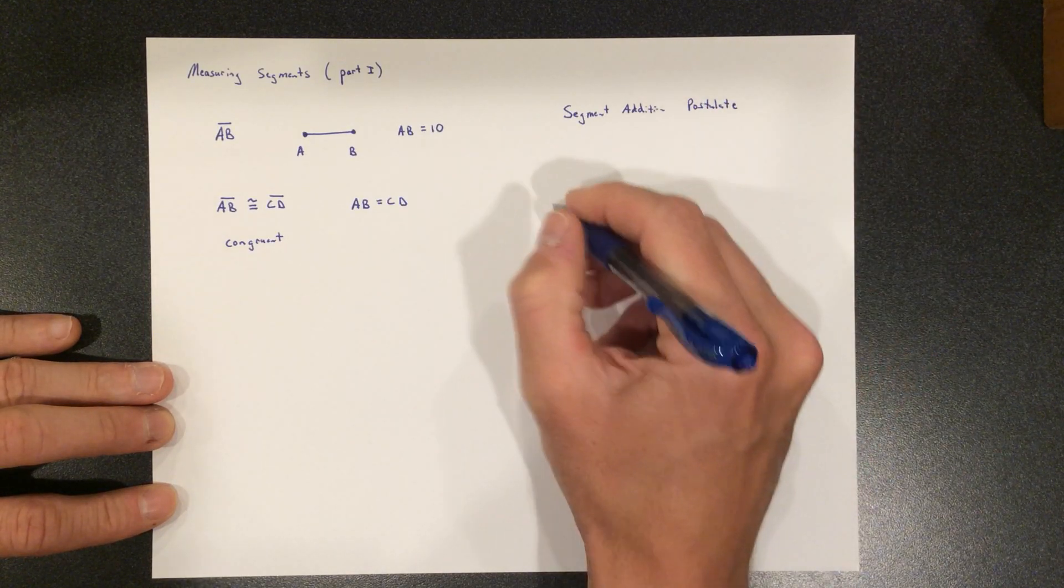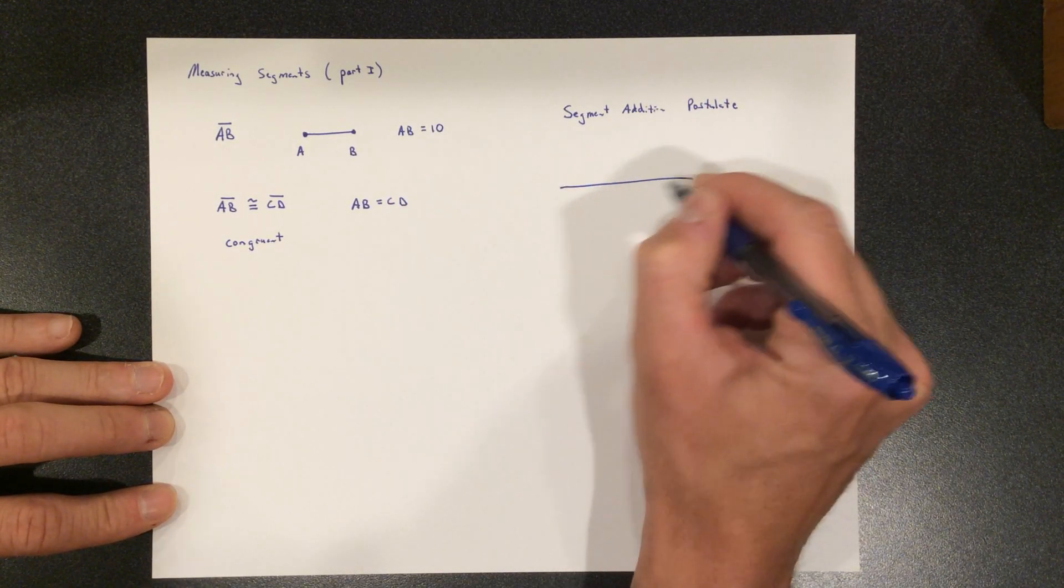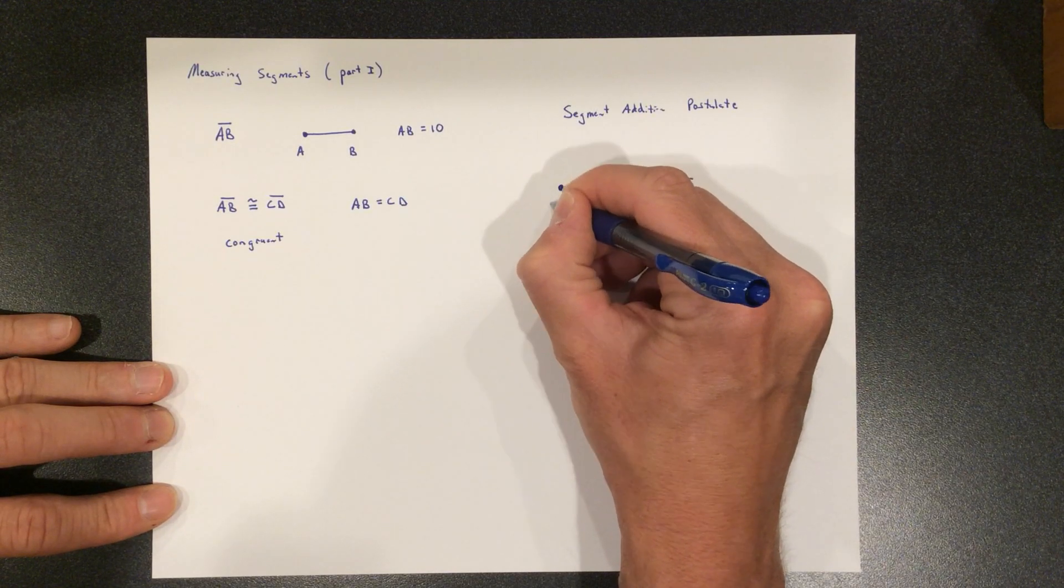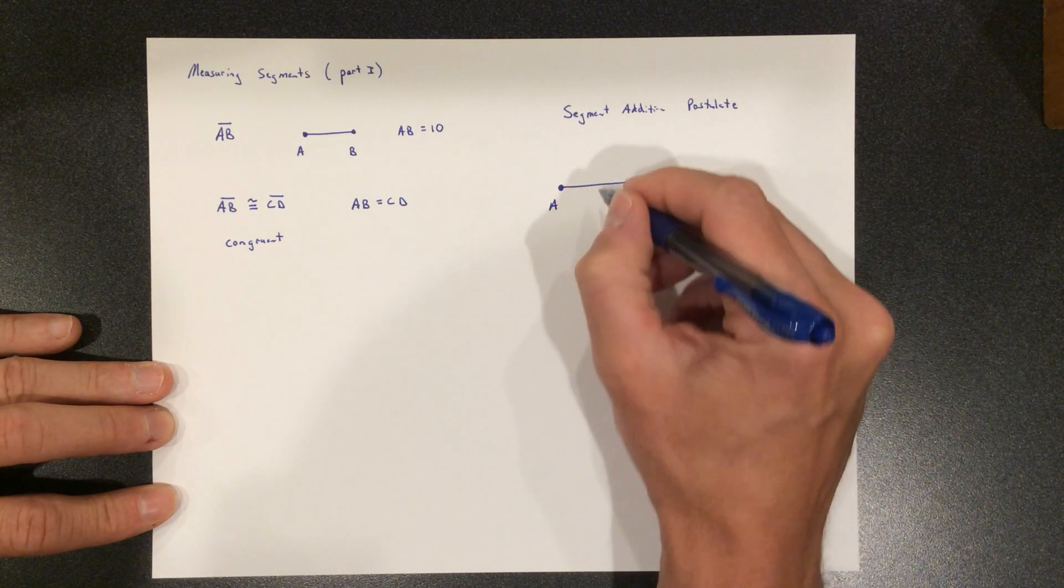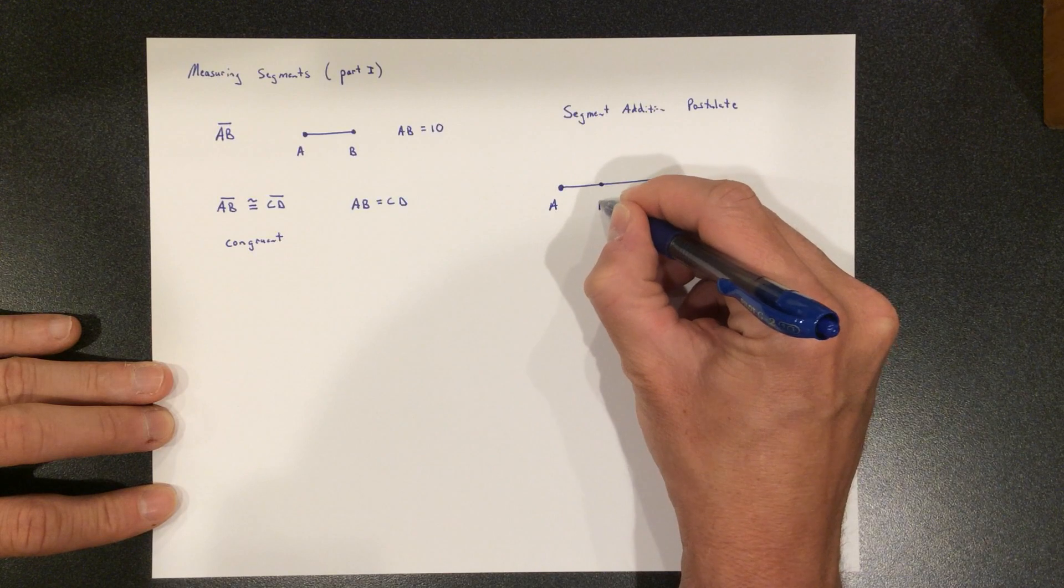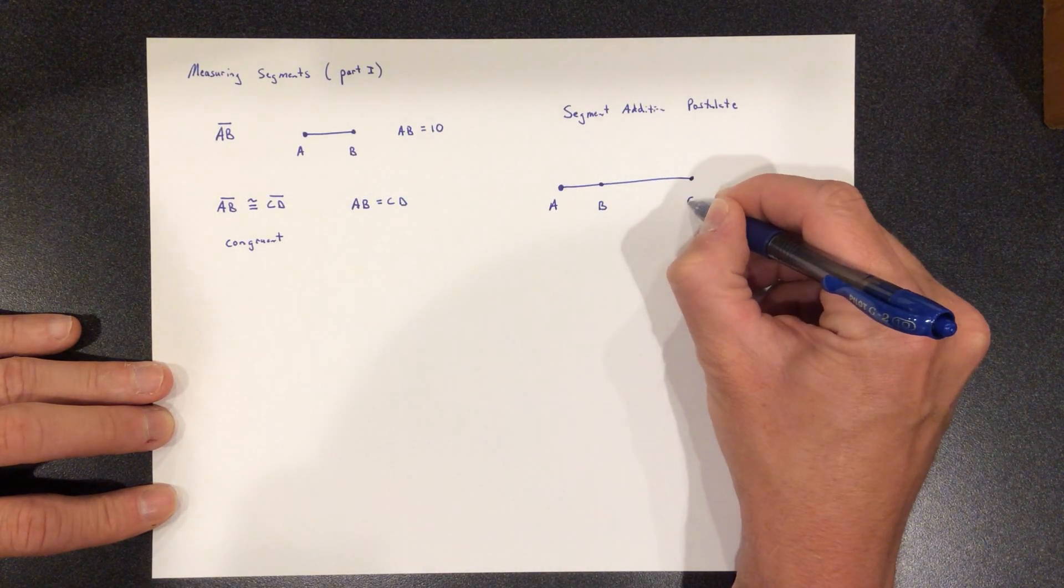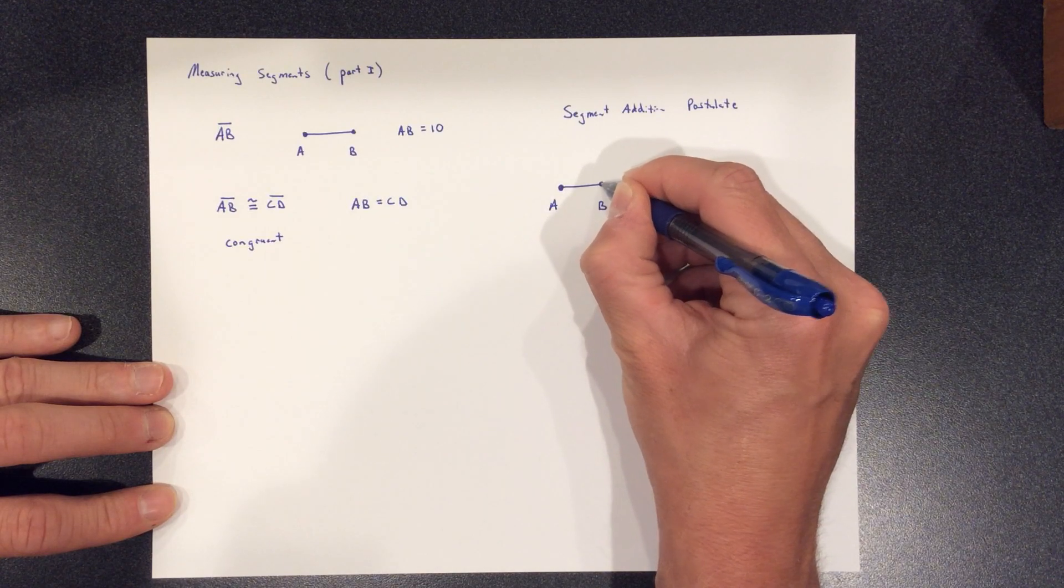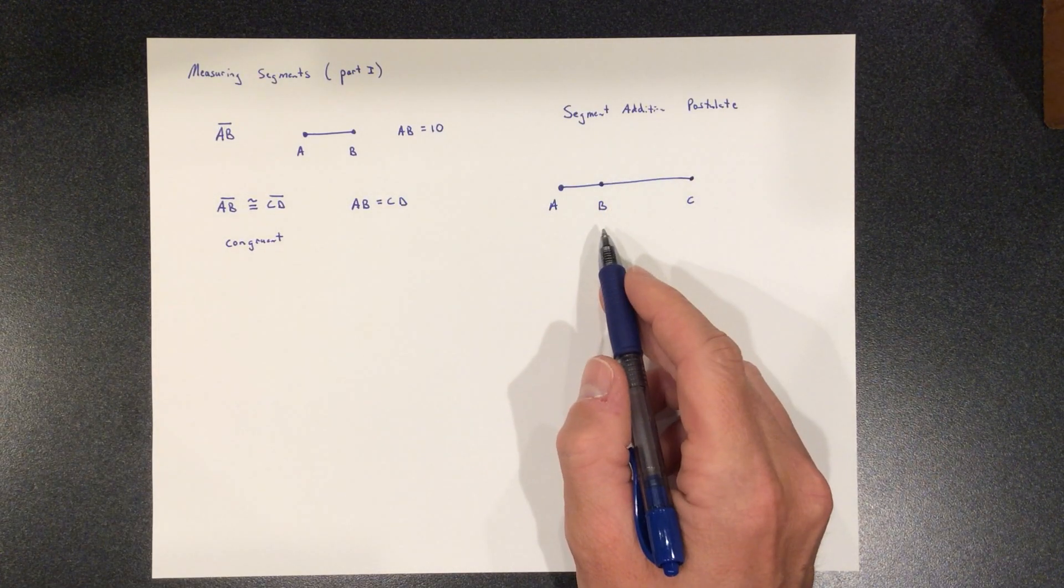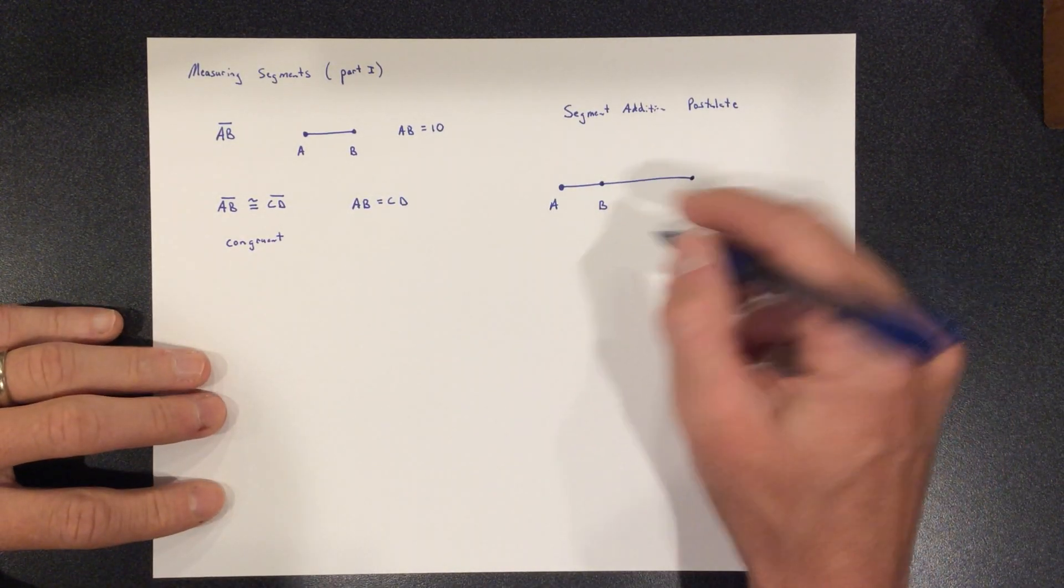Segment addition postulate. It's just fancy, okay? Don't overcomplicate it. So let's take a line segment with three points. We'll say A and B and then C. Okay, three points. A, B, and C are all collinear. B is what they would call between, right? This is between.